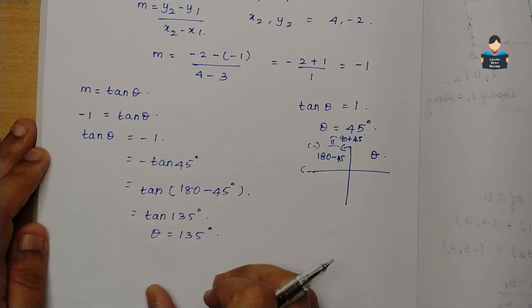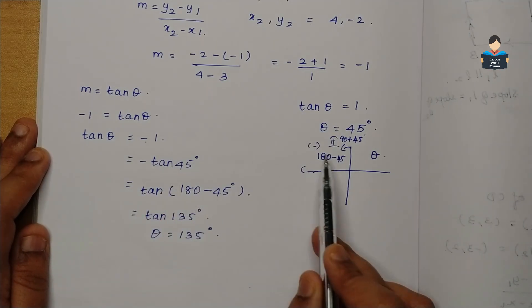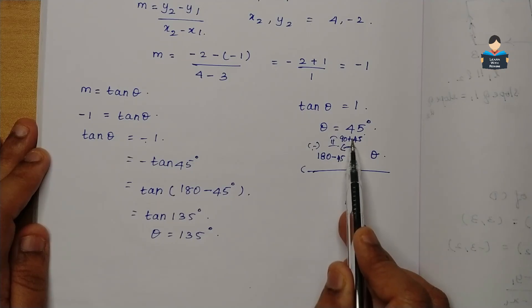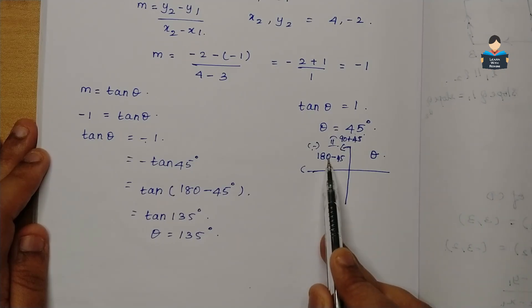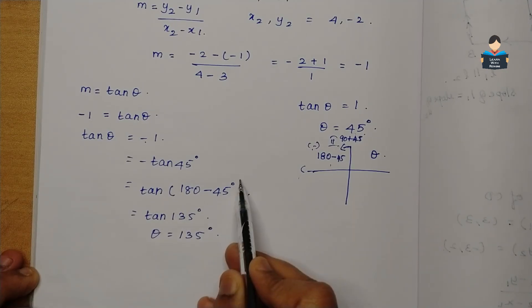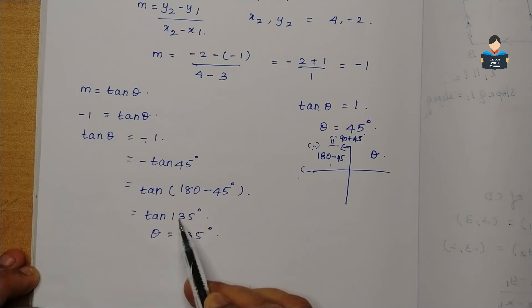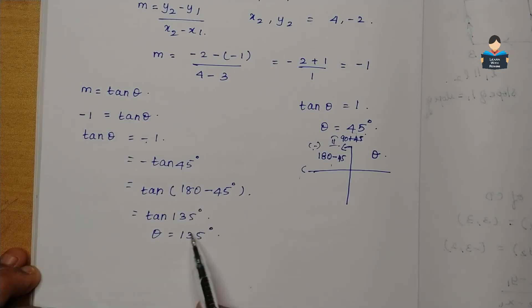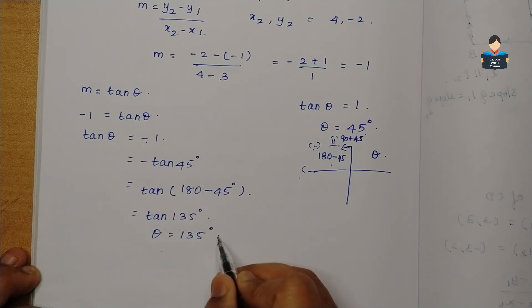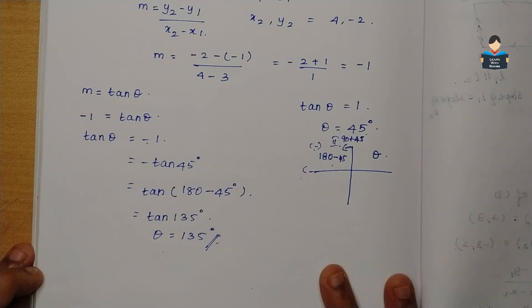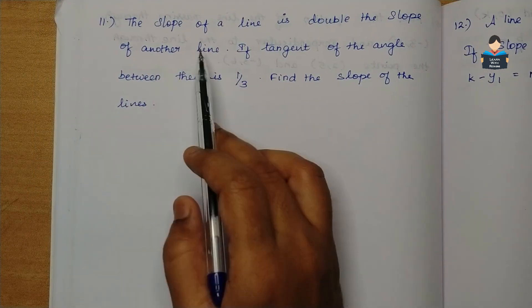So 180 minus 45 is 135 degrees. Therefore theta value is 135 degrees.